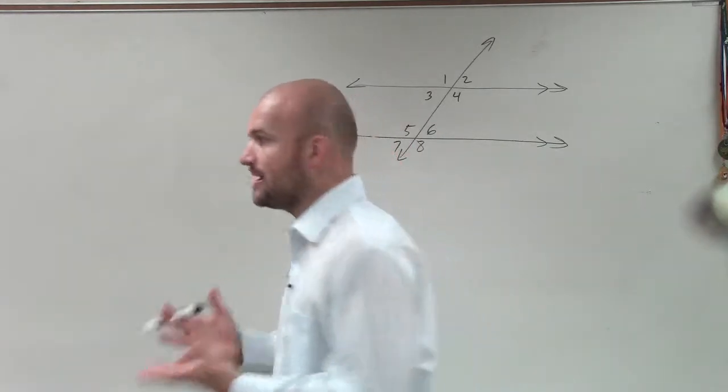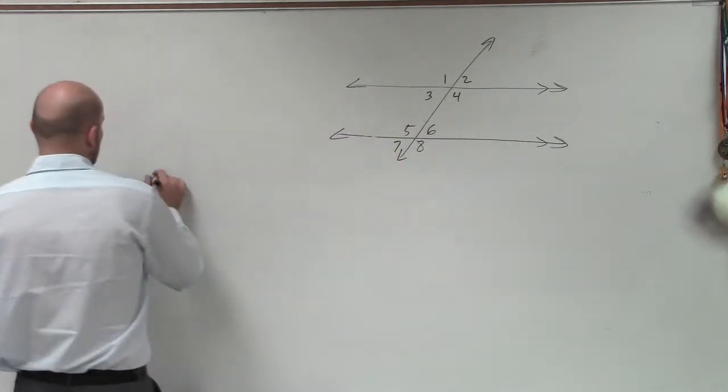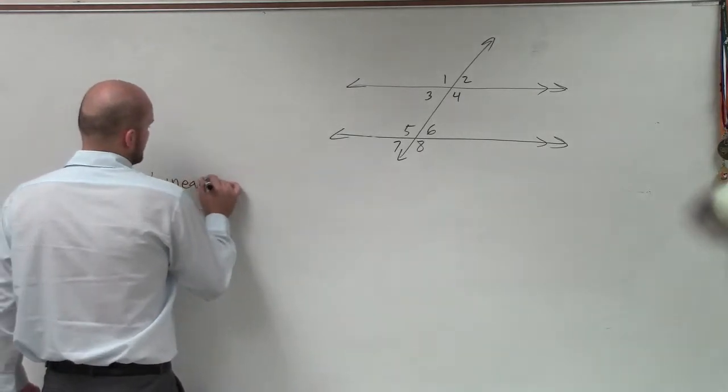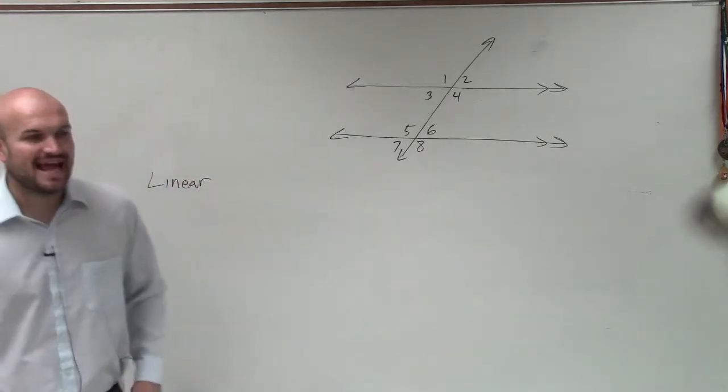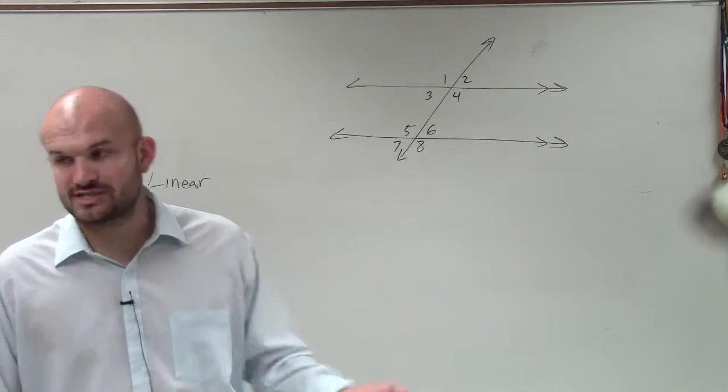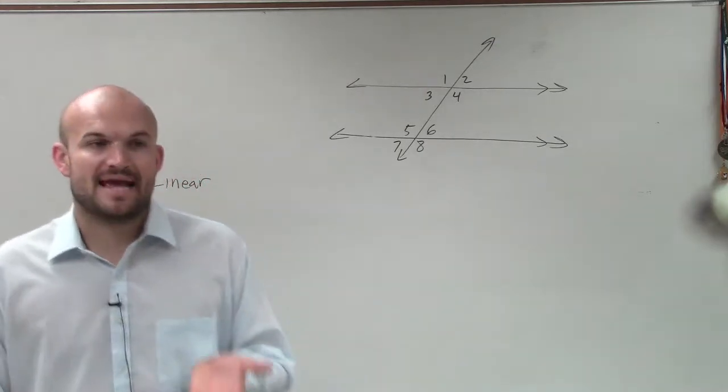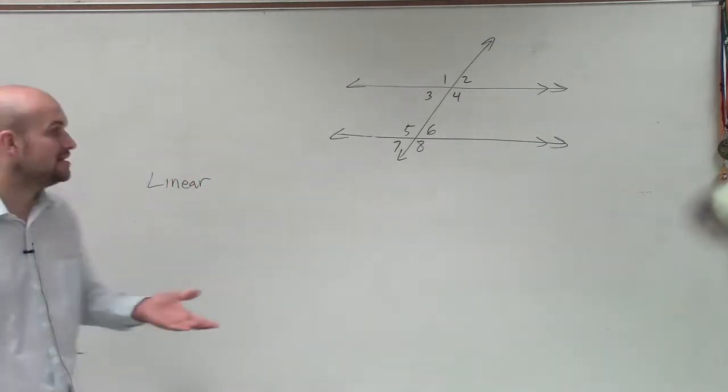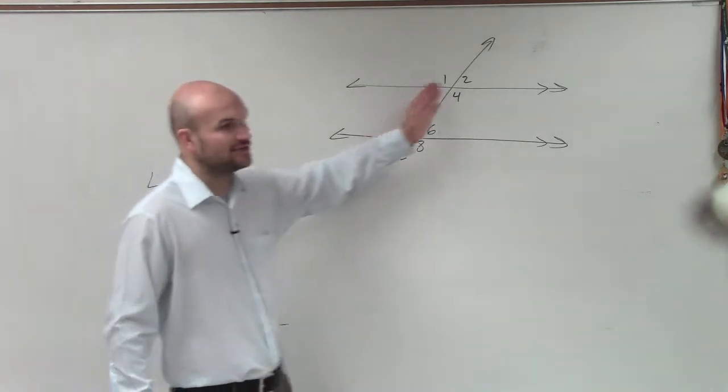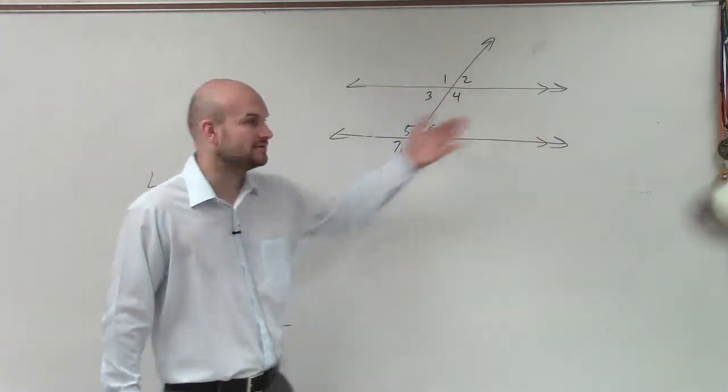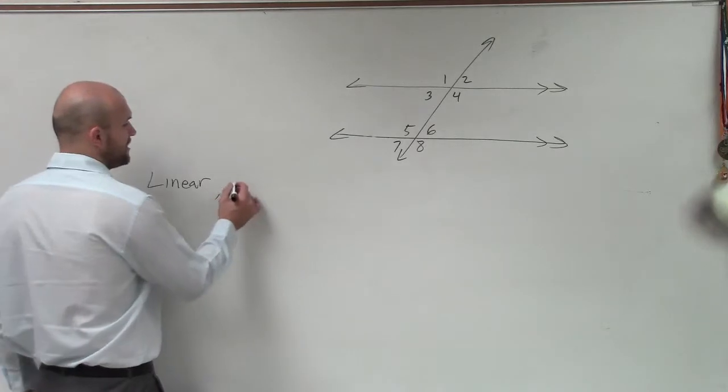Now, the first two things I want you to understand is it doesn't matter for the first two. We don't need to have parallel lines to find a linear pair. Remember, all a linear pair is, a linear pair is two adjacent angles. That means they share the same vertex and the same side that make up a straight line. They have opposite rays.